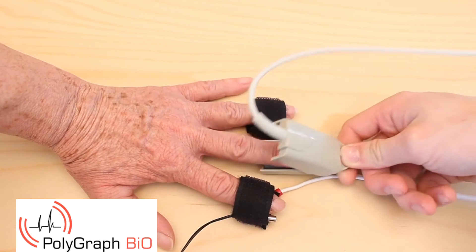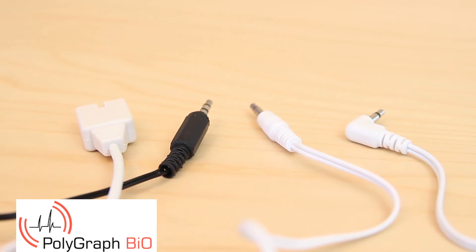Finally, attach the heart rate sensor to the pointing finger of the subject's right hand. Now that all the probes are attached to the body of the test subject, you need to connect the probes to the connection box.